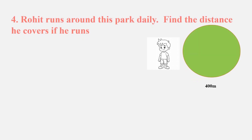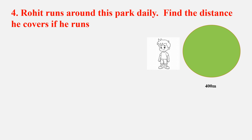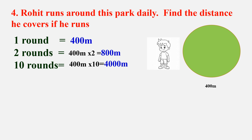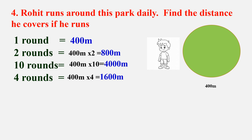This is Rohit. Rohit runs around a park daily. One round of the park is 400 meters. Find the distance he covers if he runs 2 rounds: 400 meters × 2 = 800 meters. If he covers 10 rounds: 400 meters × 10 = 4000 meters. If he covers 4 rounds: 400 meters × 4 = 1600 meters.